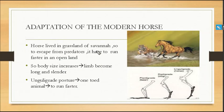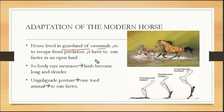The adaptation of the modern horse: the horse lived in the grassland of the savanna. To escape from the predators such as tigers and lions, it has to run faster in open land.